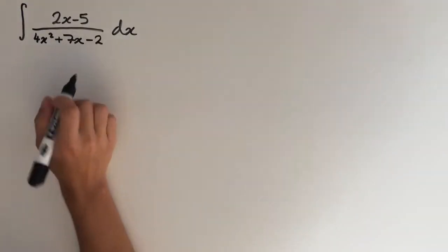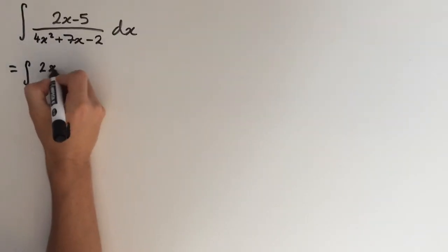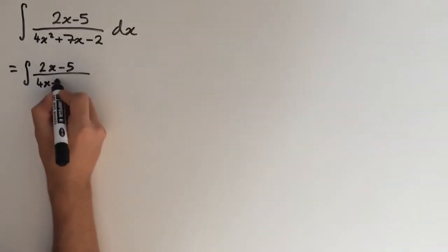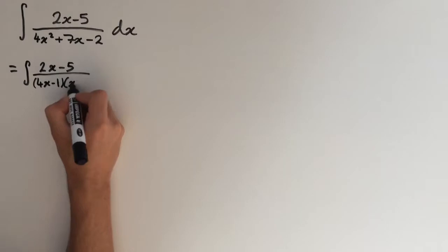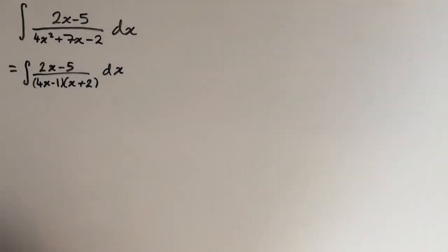First step is to factorise the denominator. So this is going to be 2x-5 over, and the factorised form of this is 4x-1 times x plus 2. And now we can use partial fractions.